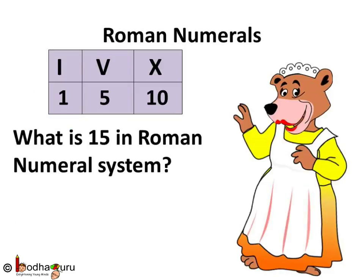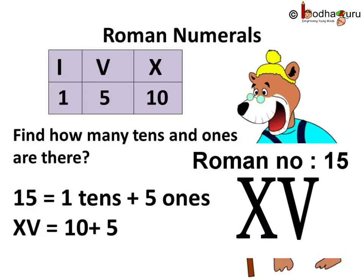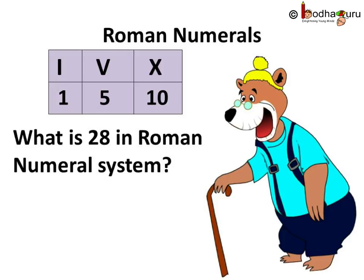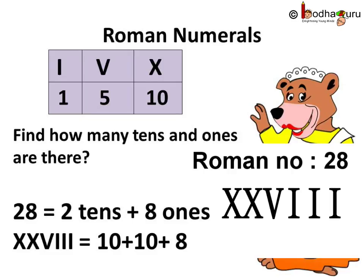Now let us test ourselves. What is 15 in the Roman numeral system? Let us find how many 10's and 1's there are for 15. 15 means 1 ten and 5 ones, hence 15 is 10 plus 5, which is X followed by V. And what is 28 in Roman numerals? 28 means 2 tens and 8 ones, hence 28 is X followed by X, and for 8 we write V followed by 3 I's.